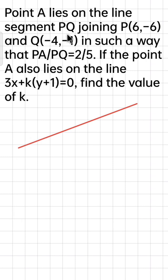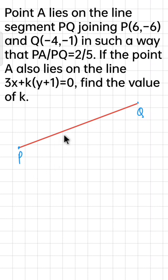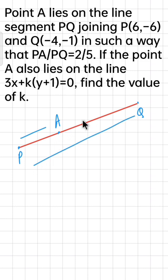तो पहले P और Q को join करके एक line बना लेता हूँ। मान लेते हैं this point is P and this point is Q, तो इन दोनों points को join करने से हमें एक line मिल रही है PQ। इस PQ line पर कहीं A आता है। PA and AQ नहीं given है — PA and PQ given है। तो PA and PQ का ratio 2 is to 5 है।